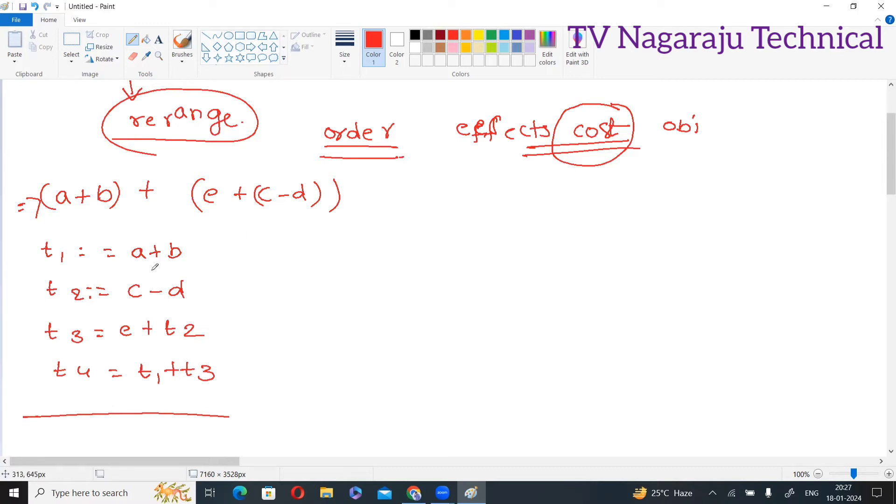Now I will construct a DAG for this. First, plus a b, this is t1. Now c minus d, here I will write t2 c d. Now t3 value is plus, e plus t2. Now t4 is t1 plus t3. This is t4. Now you know this is the DAG for this expression.